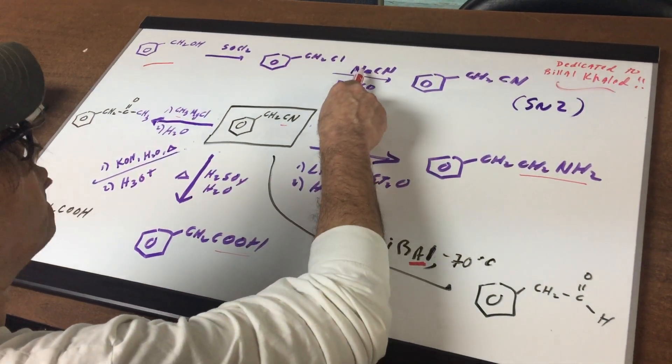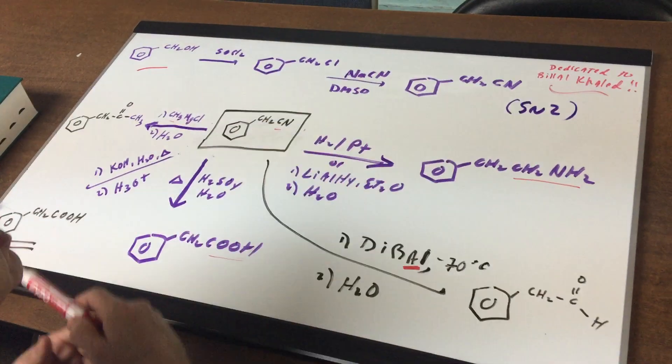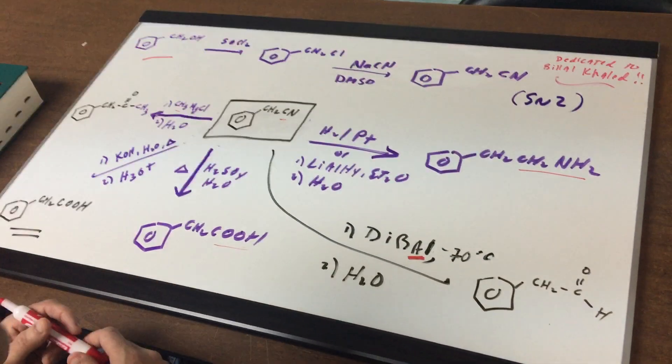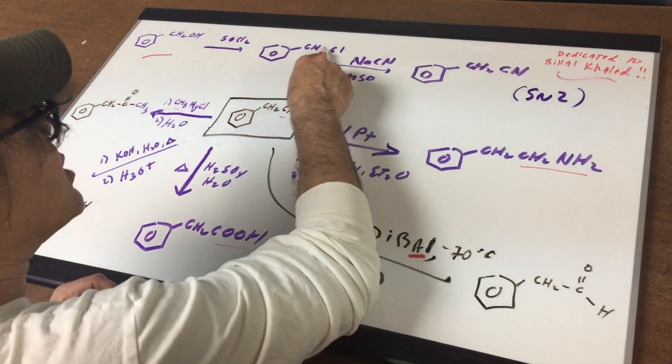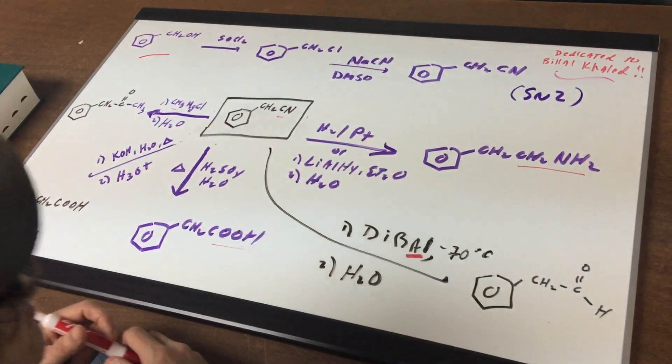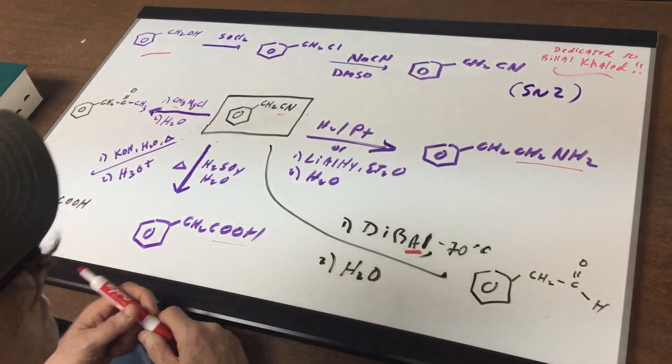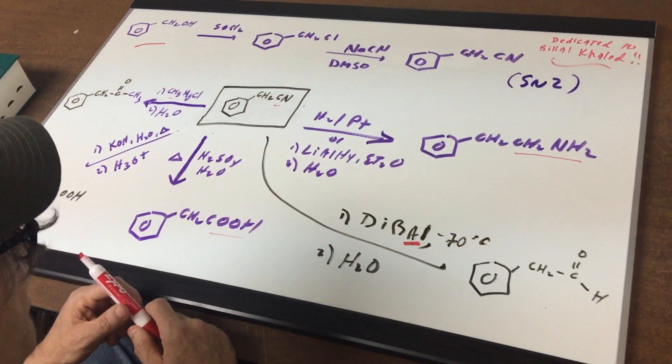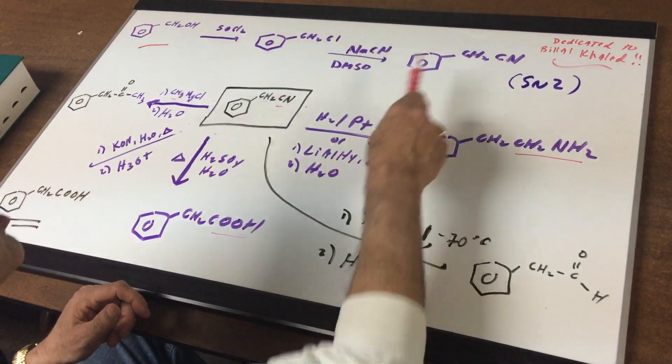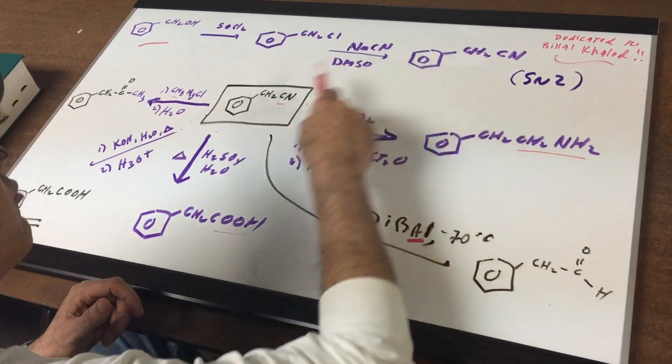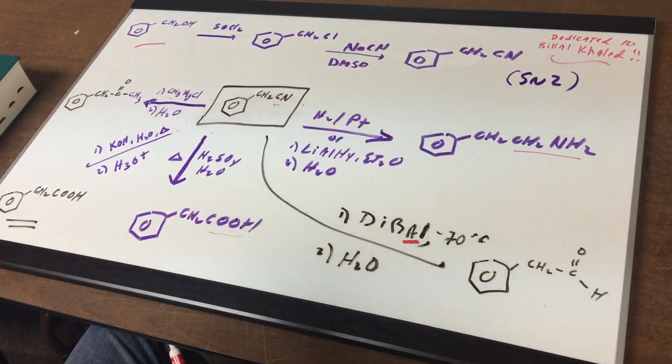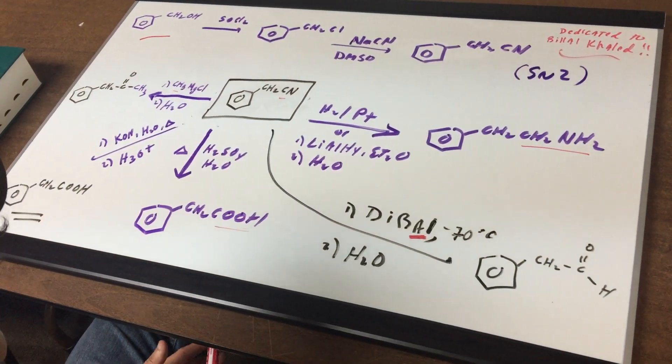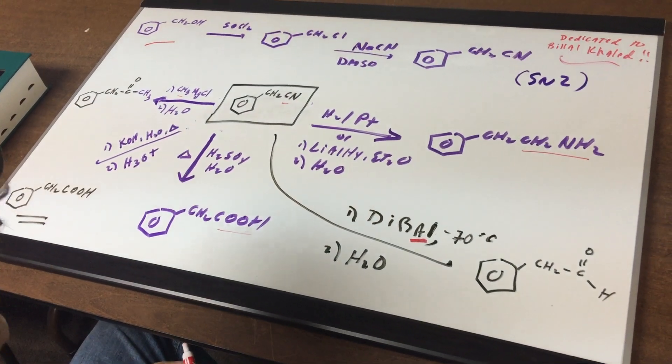I then used the SN2 reaction, NaCN, and I used a polar aprotic solvent, such as DMSO, and that displaced the chlorine and put on the cyanide group. So as you can see, I used the SN2 reaction in order to make this nitrile. So what we're going to do is we're going to take the nitrile we've just made, and I'm going to do a few reactions on it to show you the ones we need for the DAT.